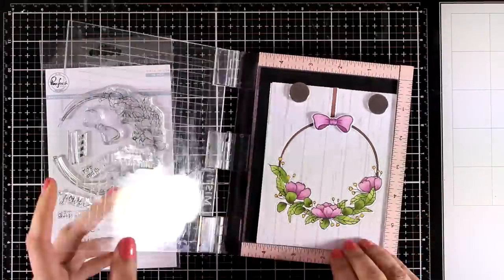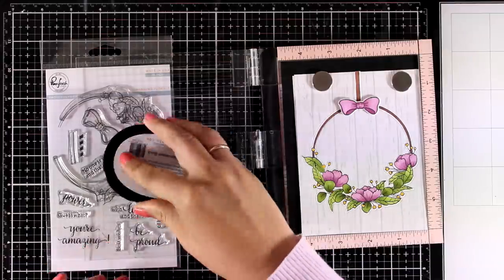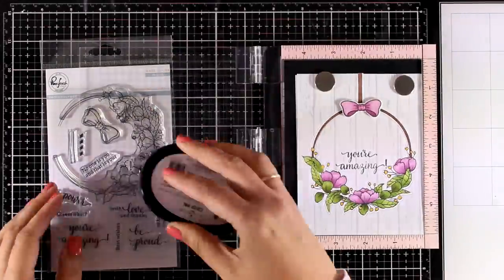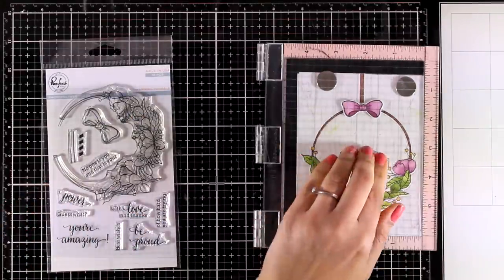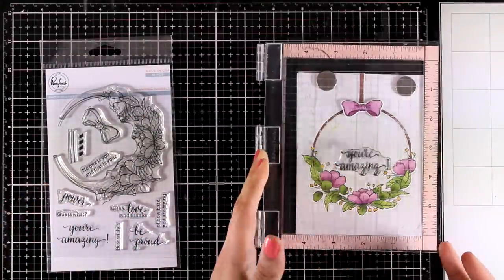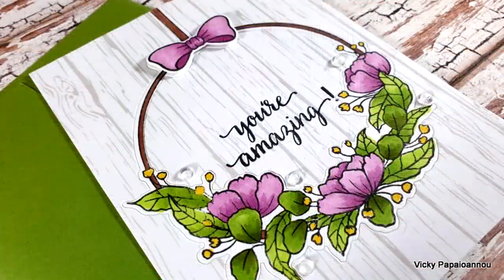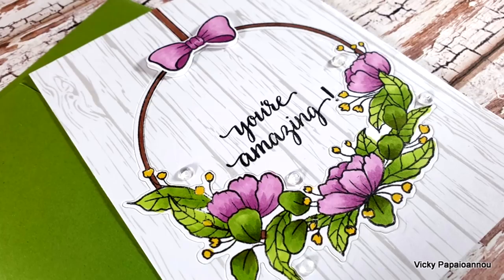The stamp set with the wreath comes together with lots of sentiments. One of my favorites is the one that says you are amazing. I think it fits many occasions and has a lovely script font. For this card I also used some gems here and there to embellish it a little bit more. And then I stuck this panel on top of a standard card that is 4.25x5.5.